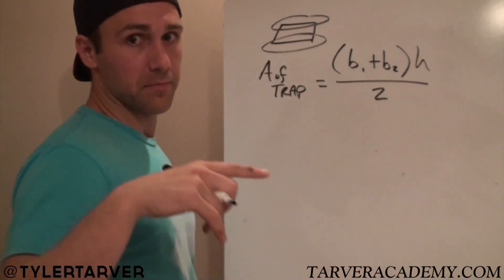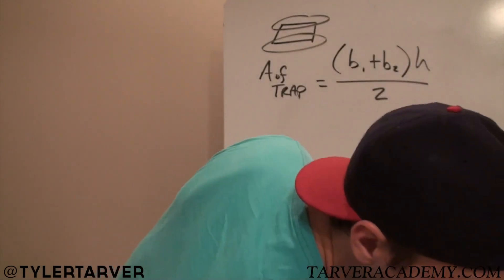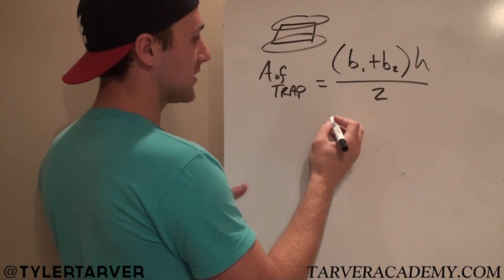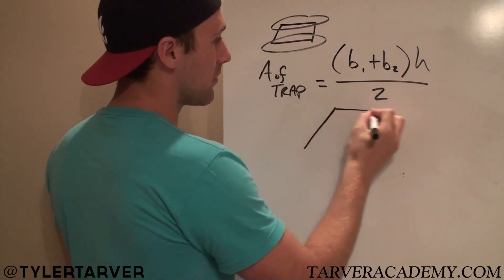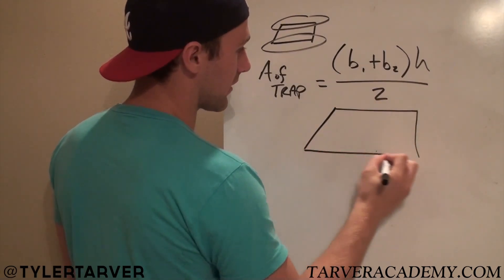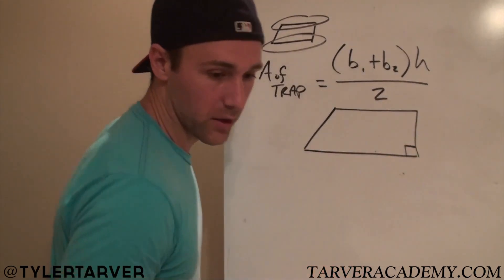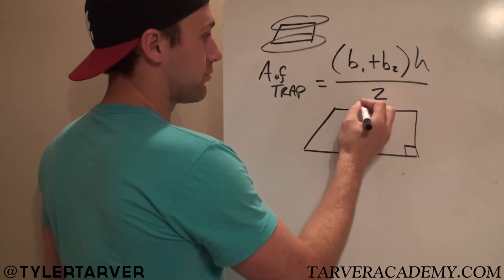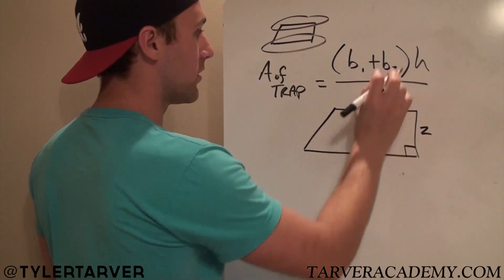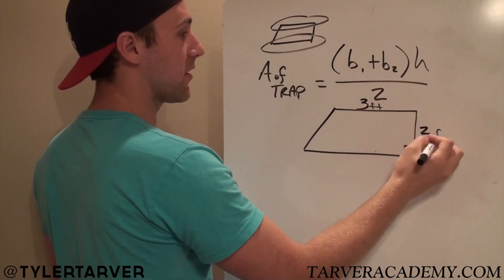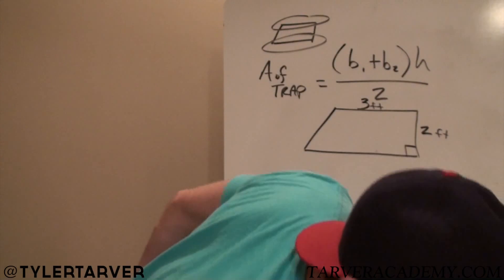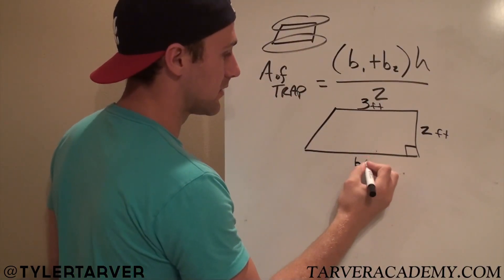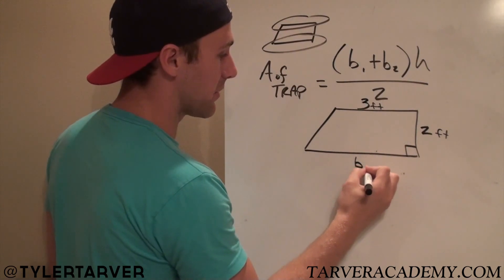So let's find the area of this. Let's get a problem, let's get an example problem for the people in the house. Let's say we've got a pretty little trapezoid that looks like this. It's going to be a right angle. Let's make that 3 feet, and this will be our B2.